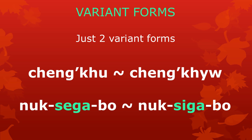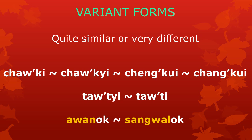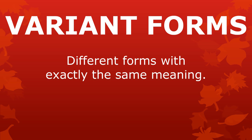Some meaningful parts have just two variant forms, while others have more than two. Here we see four different forms of the word meaning 'big knife,' and nine different forms of the meaningful part that indicates an ongoing action — the progressive durative part. Some variant forms are quite similar to each other, while others can be very different. After looking at examples, we clearly see that variant forms are different forms with exactly the same meaning.